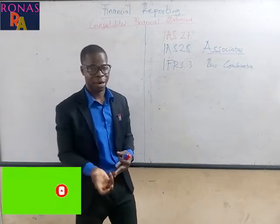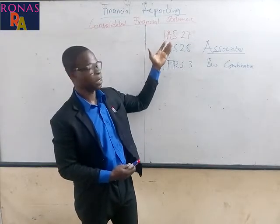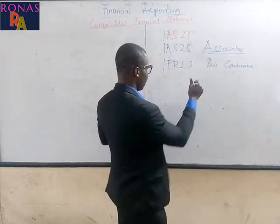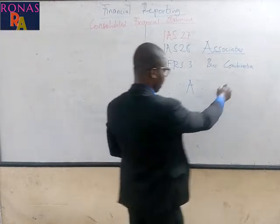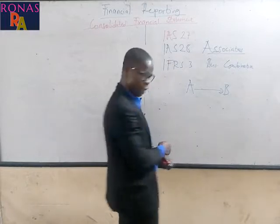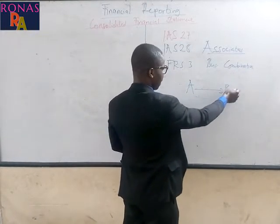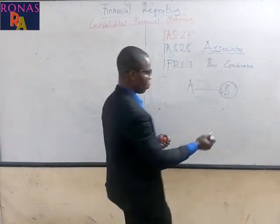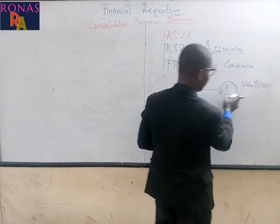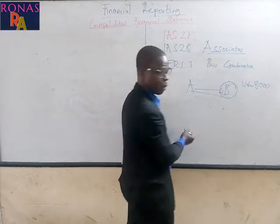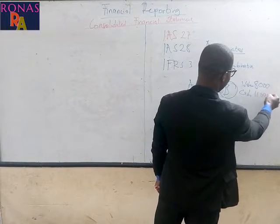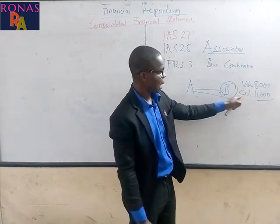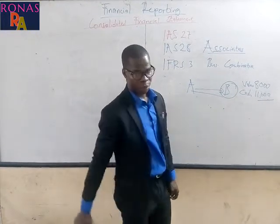We will remember how goodwill arises. When it comes to group accounts or consolidated financial statements, there is always an issue of goodwill because a company is going to acquire another company. For instance, if we say we have entity A and entity B as separate entities, and A is acquiring B — if you value all the assets of B at 8,000, but A ends up paying cash of 11,000, then the assets of B are valued at 8,000 and the cash A is paying is 11,000. This gives rise to goodwill.